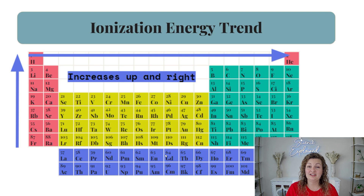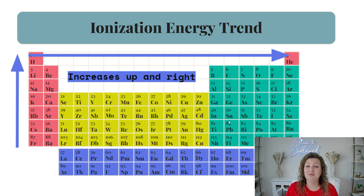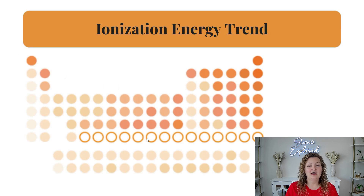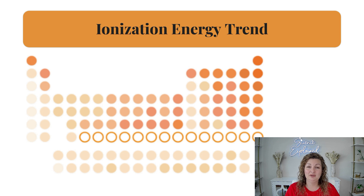There is a trend for this on the periodic table. It does increase as you go up and it increases as you move to the right. Or you could just draw a diagonal arrow up and to the right — it would mean the same thing. This is a true trend, meaning it does not work for every single element on the periodic table. However, it does work for the majority, so we can use the trend in most situations. There's an exception to every rule.